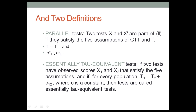The first is the definition of parallel tests, which states that two tests are parallel — x and x prime — if they satisfy the five assumptions of classical test theory. Those include that the obtained score equals the true score plus the error score, that the expected value of the obtained scores equals the true scores, and those three housekeeping equations. Additionally, the true scores on the first test must equal the true scores on the parallel test, and the variance of the error scores must be equal across both tests.